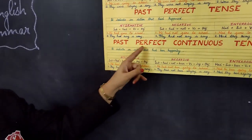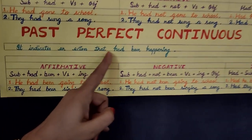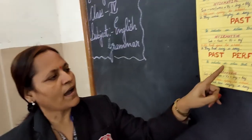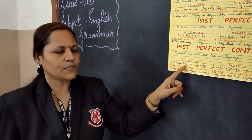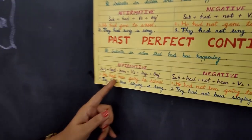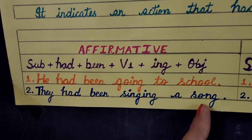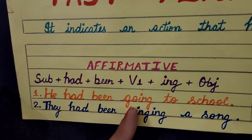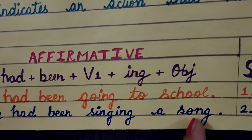Now let's move towards past perfect continuous tense. It indicates an action that had been happening. Here you can see the structure of the affirmative sentence: subject plus had plus been plus verb one plus ing plus object. For example: He had been going to school. They had been singing a song. Here he and they are the subject, had been is the helping verb, and going and singing are the -ing form of the verb. School and song are the object.